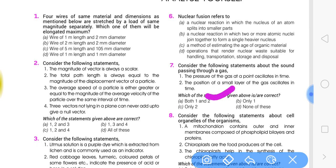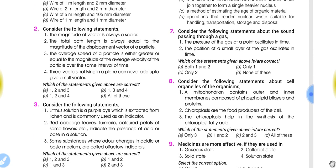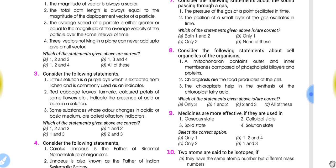Question number 8: Consider the following statements about cell organelles of organisms. Mitochondria contains outer and inner membranes composed of phospholipid bilayer and proteins. Chloroplasts are the food producers of the cell. The chloroplasts help in the synthesis of chloroplast fatty acids. The correct answer to this question is option B: only statements 1 and 2 are correct.